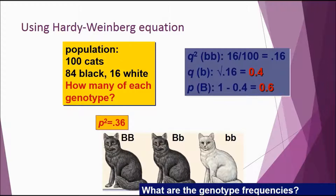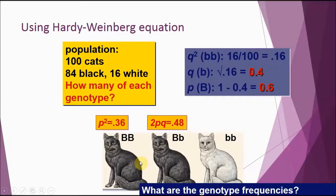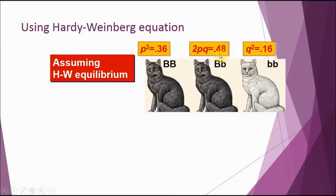Now plug the values into p squared plus 2pq plus q squared equals 1. For p squared: 0.6 times 0.6 equals 0.36, so 36 percent of the cats are homozygous dominant. For 2pq: 2 times 0.4 times 0.6 equals 0.48, so 48 percent are heterozygous. You can double-check by computing q squared: 0.4 times 0.4 equals 0.16, or 16 percent recessive — which matches what we were given.